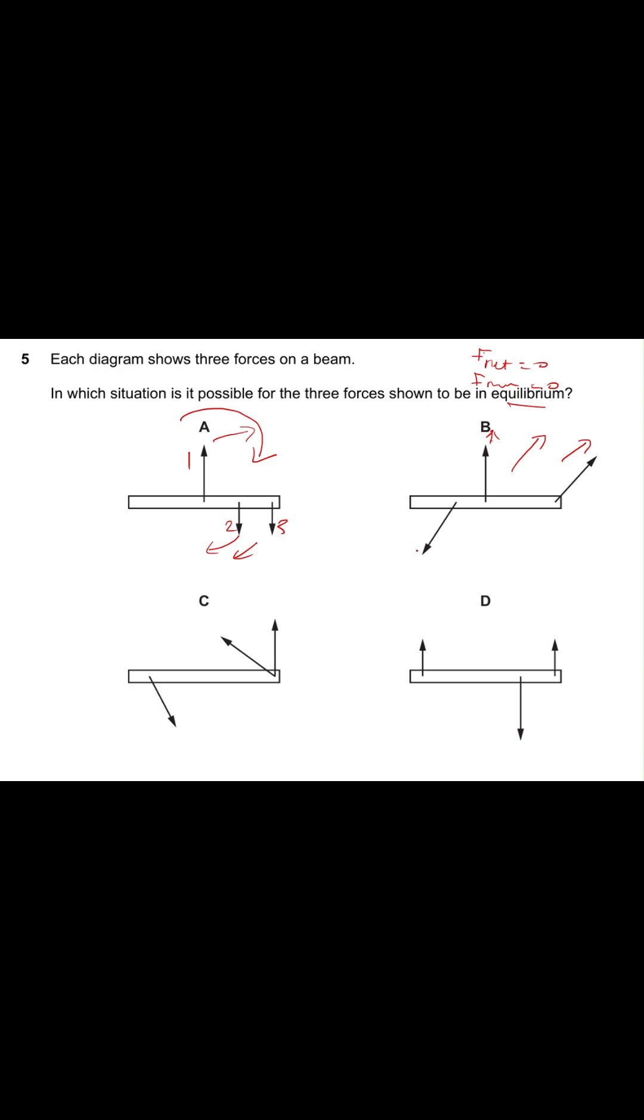So the object is going to go in this direction, which means B is also going to turn clockwise. What about C? This is going to turn the beam in this direction, anticlockwise.